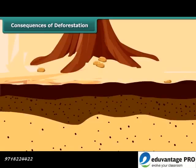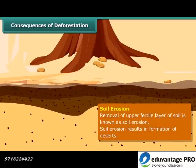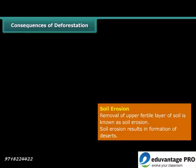Soil erosion: fewer trees result in more soil erosion. Removal of the top layers of the soil exposes the lower hard and rocky layers. This layer of soil has less humus and is less fertile. Gradually, the fertile land gets converted into deserts — this is called desertification.